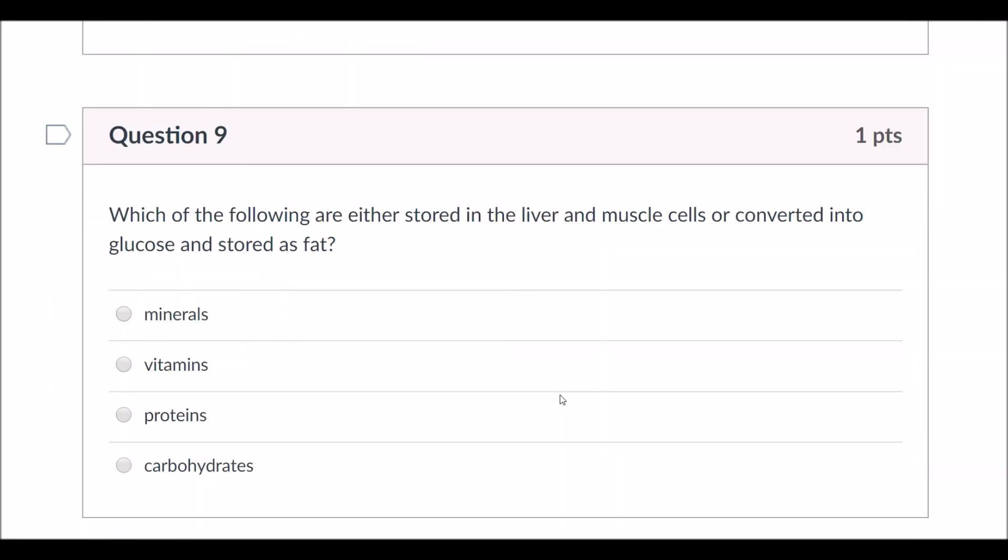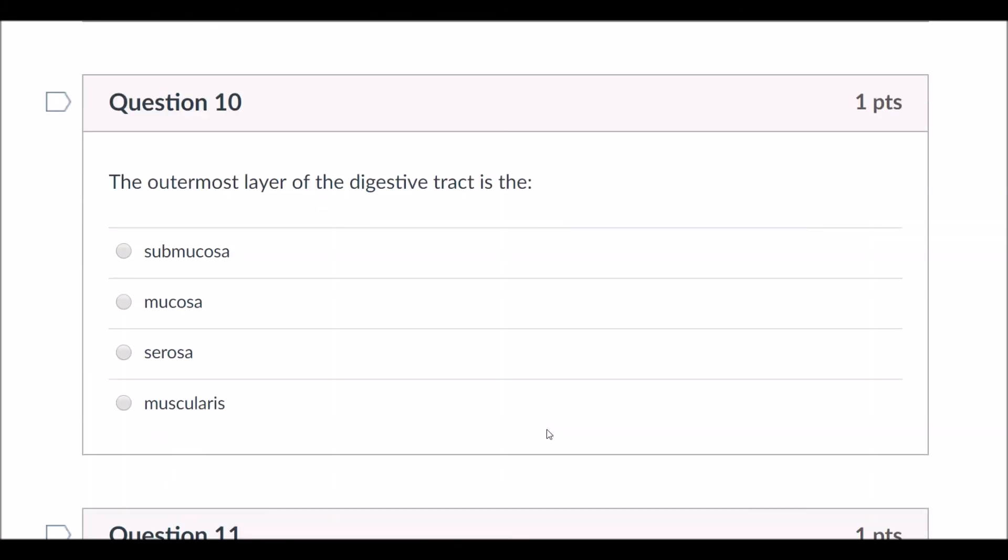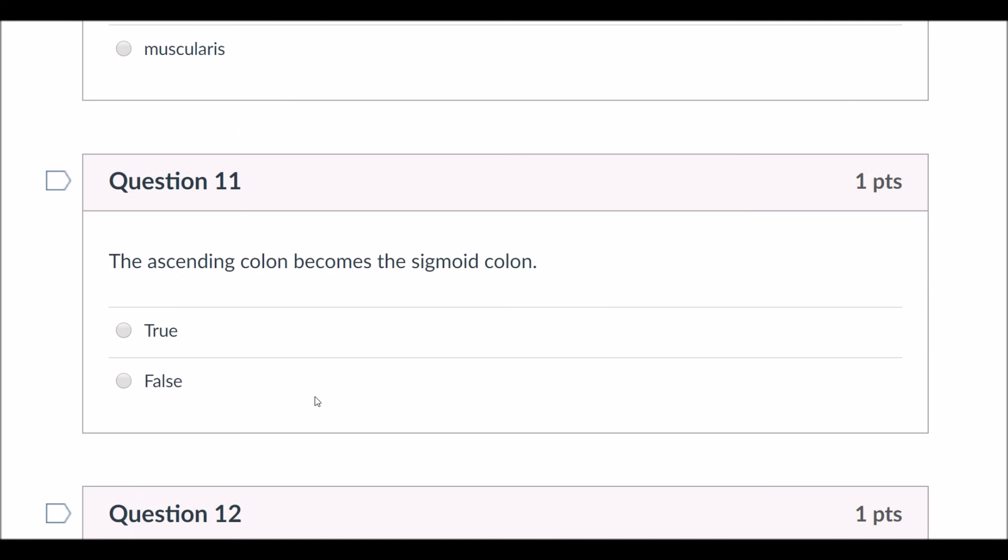Fat-soluble vitamins are A, D, E, and K. Yeah, that one's good. Which of the following are either stored in the liver and muscle cells or converted into glucose and stored as fat? Yeah, those are carbs. Carbo-loading. The outermost layer of the digestive tract is the... Is that parietal or visceral?